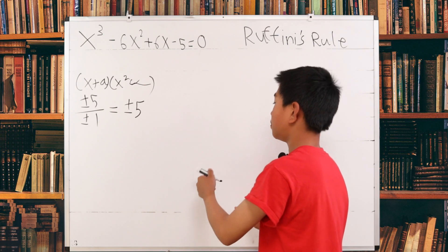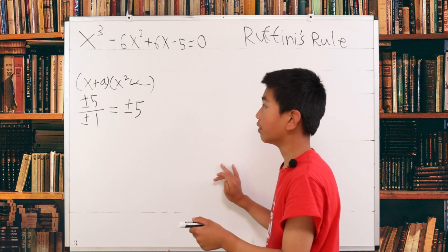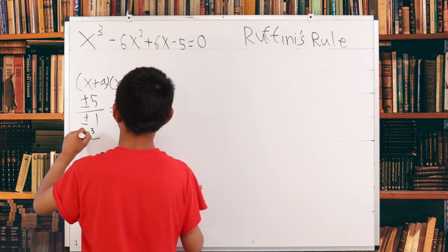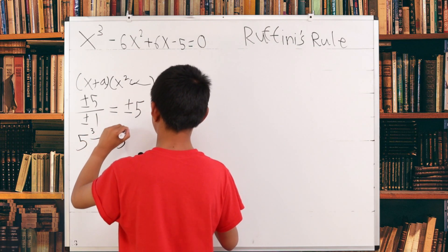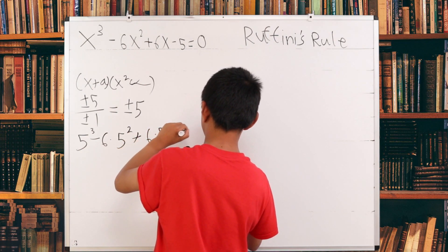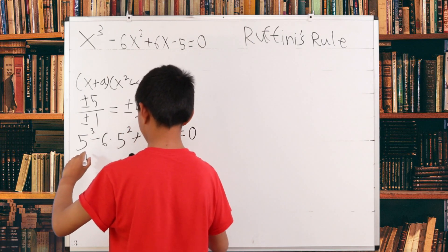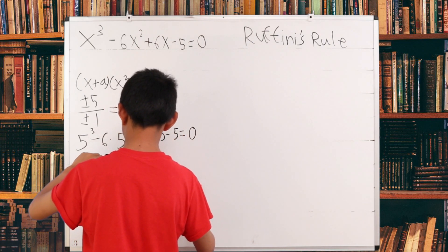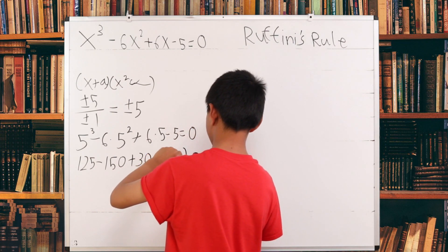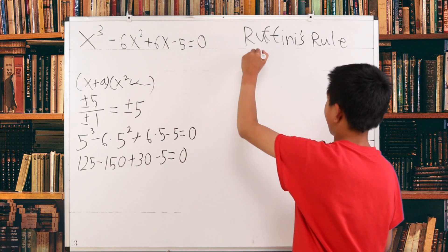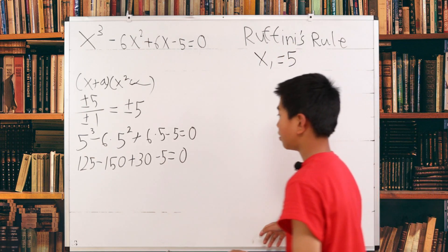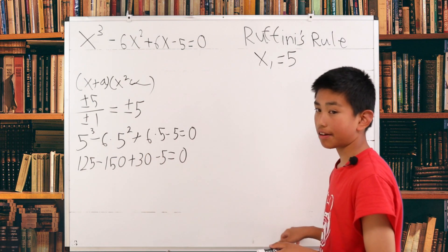We assume that positive 5 works, and to prove that, we plug it into the original equation. So 5 cubed minus 6 times 5 squared plus 6 times 5 minus 5 equals 0. That gives us 125 minus 150 plus 30 minus 5, which is indeed 0. So we know that x₁ equals 5, and we don't need to check the negative value since we already have a correct answer.